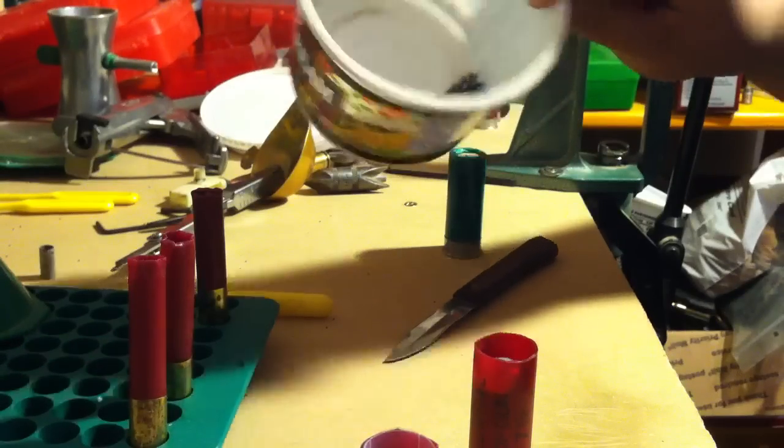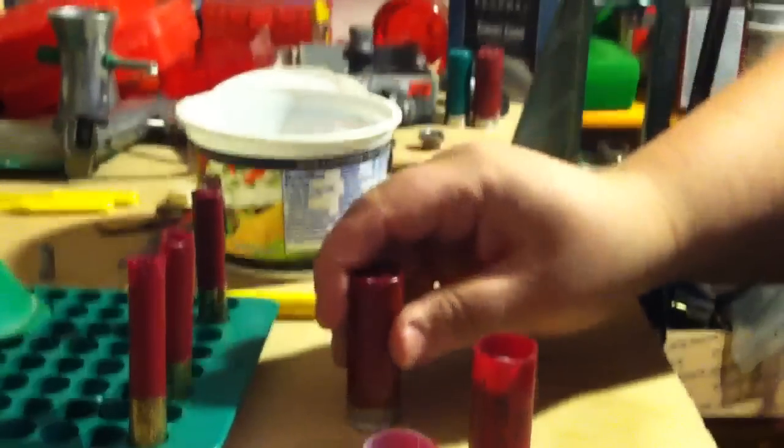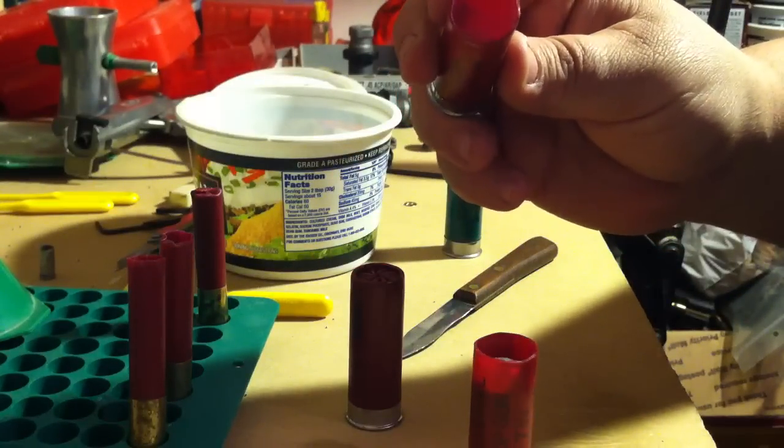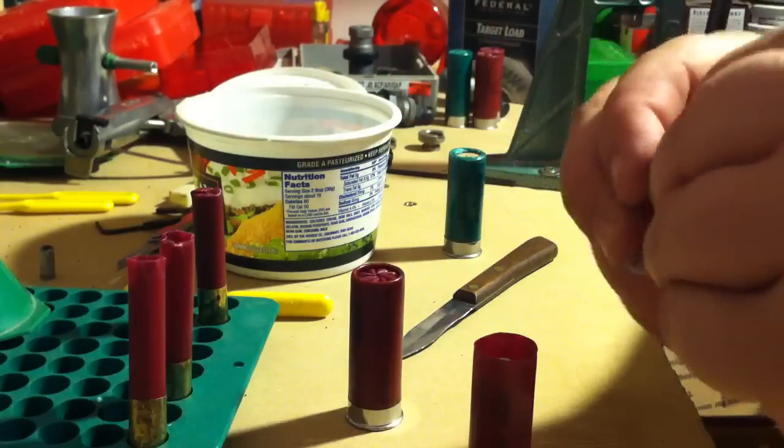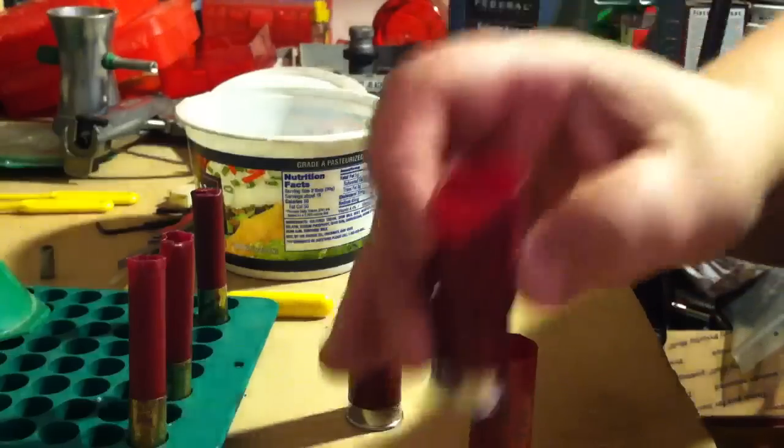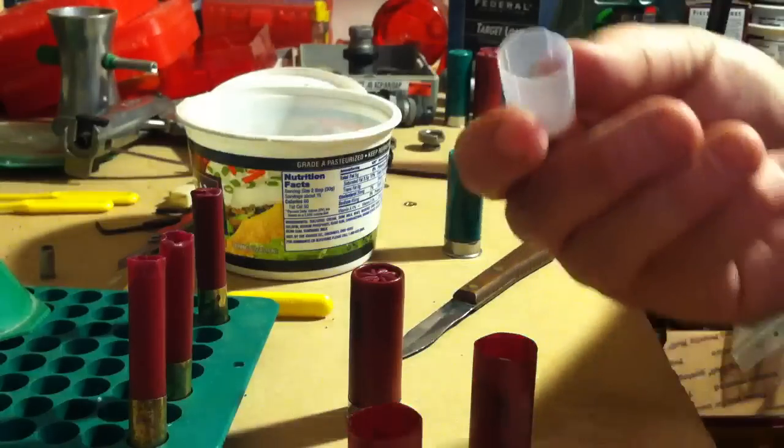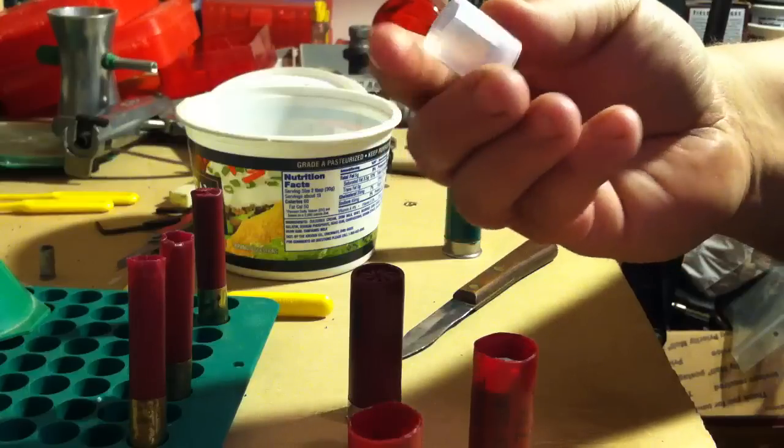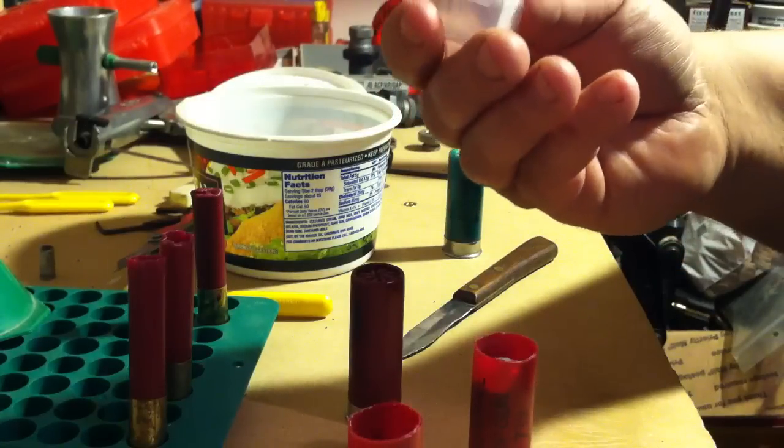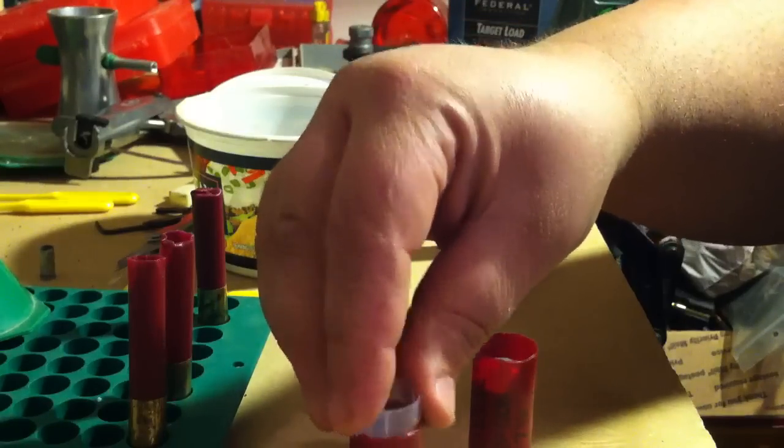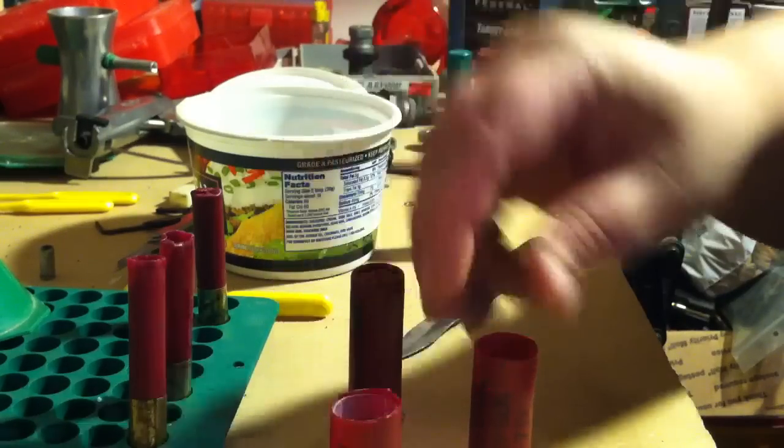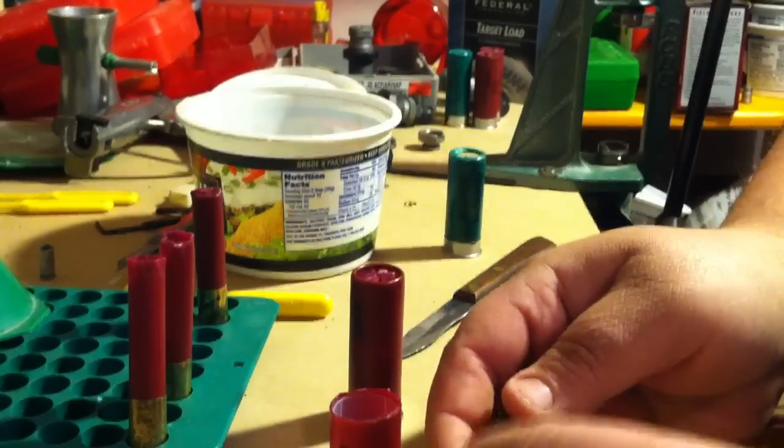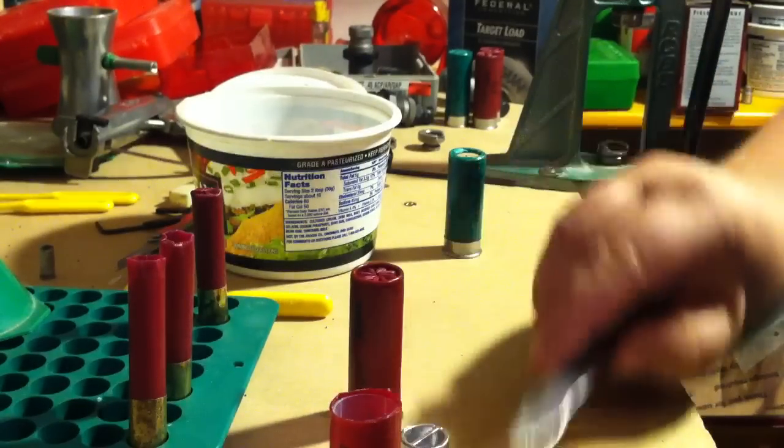What I have left is the wad. I pull the wad out and cut it down depending on the choke of your shotgun. You may be able to just throw a slug inside the wad, but because of the choke on both of my shotguns, I've been cutting down the wad.